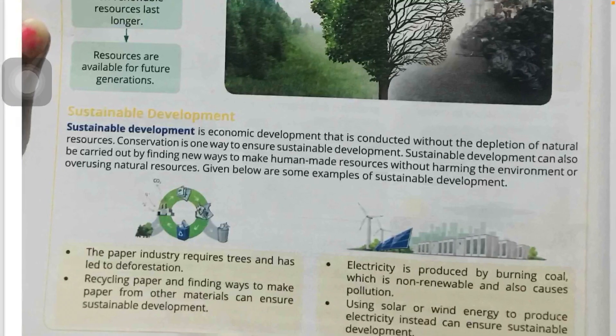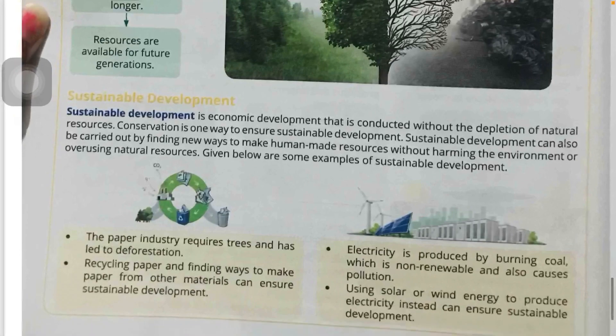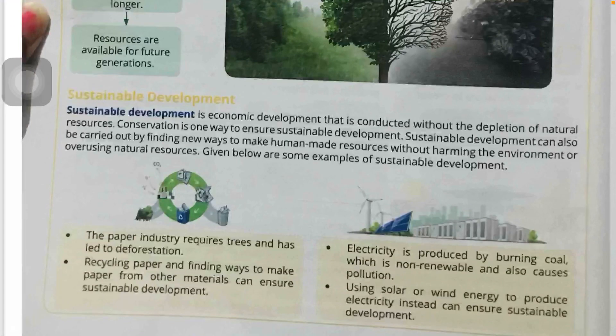For example, we make paper with the help of trees, but if we recycle paper, wastage will be reduced and deforestation will also be less. Also, electricity is produced by burning coal, but if we use solar energy and wind energy instead, that will also be sustainable development.